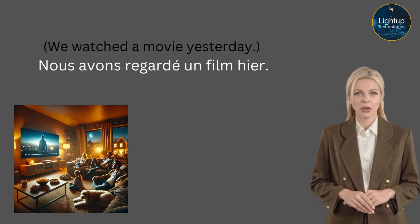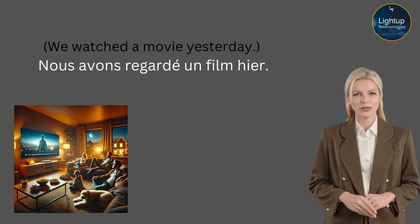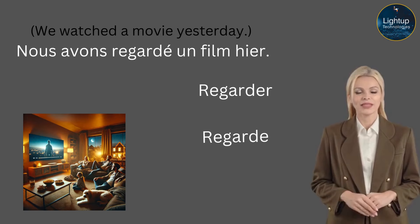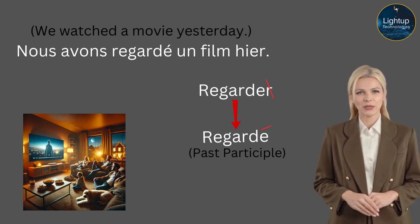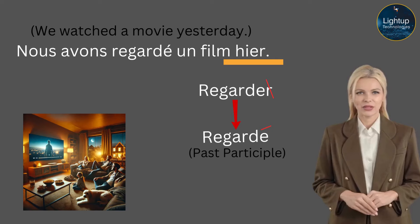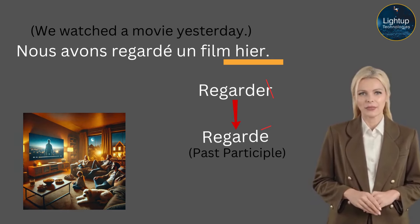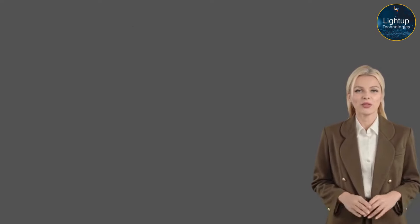For example: 'We watched a movie yesterday' — Nous avons regardé un film hier. We use the subject pronoun, then the auxiliary, then the past participle of regarder. We know it has -er. To create a past participle from an -er verb, simply drop the r and add an accent — that is your past participle: regardé. In English you can say 'I watched' or 'I have watched,' but in French it is always 'I have watched.' Another example: 'I gave a gift to my friend' — J'ai donné un cadeau à mon ami.